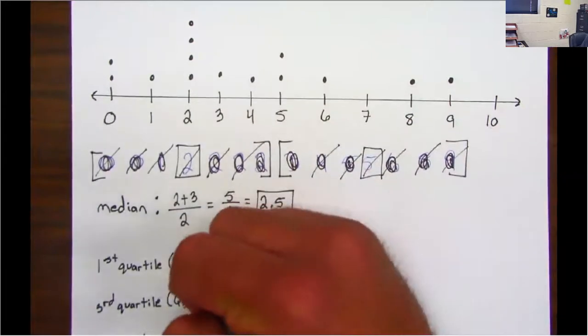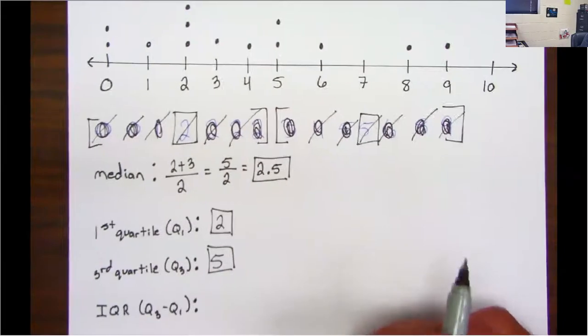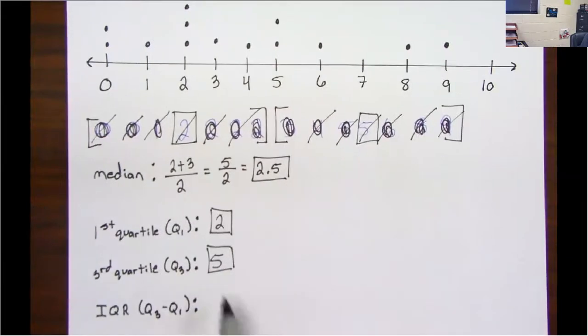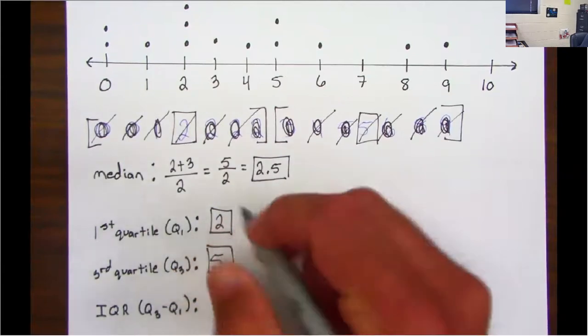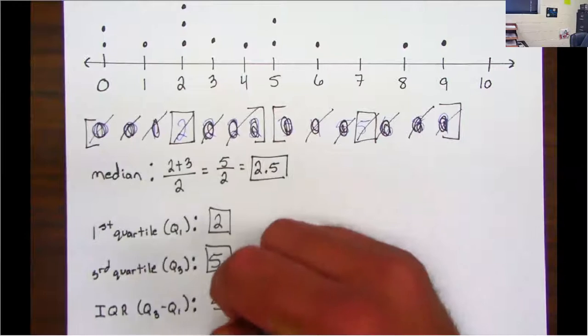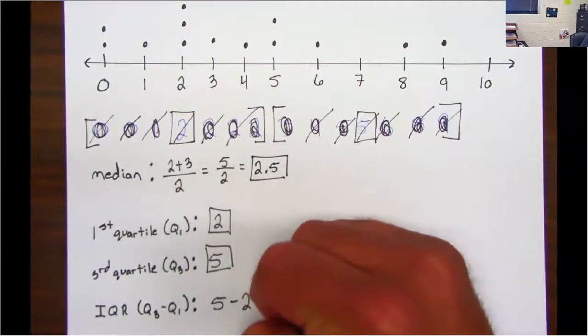Now guys, if it asks for the interquartile range, that is the same as the IQR. It's just Q3 minus Q1. So guys, five minus two is three.